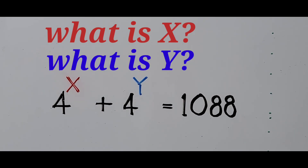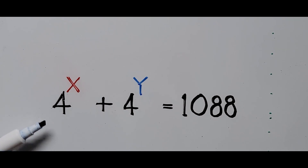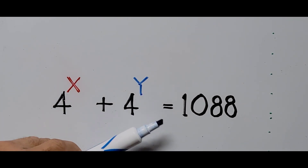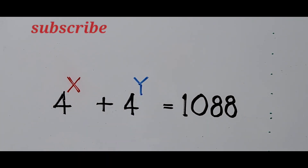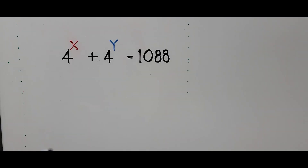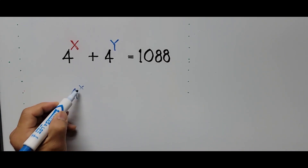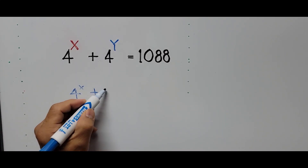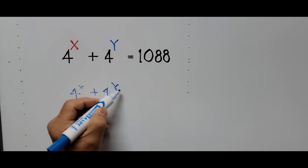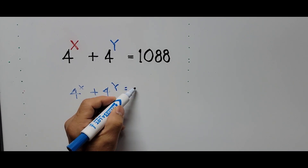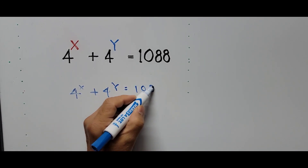Hello everyone, we have an exponential equation on the board: 4 raised to the power of X plus 4 raised to the power of Y equals 1088. We're going to find the values of X and Y.